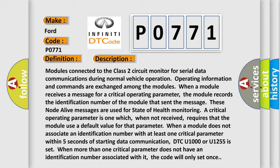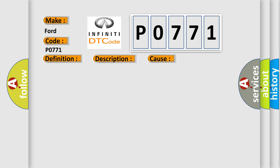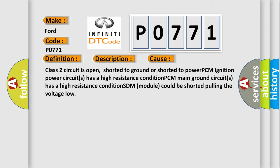This diagnostic error occurs most often in these cases: Class 2 circuit is open, shorted to ground or shorted to power; PCM ignition power circuits has a high resistance condition; PCM main ground circuits has a high resistance condition; SDM module could be shorted pulling the voltage low.